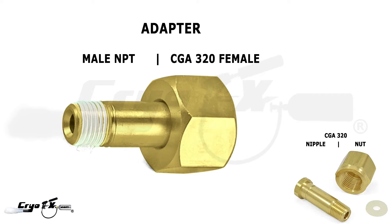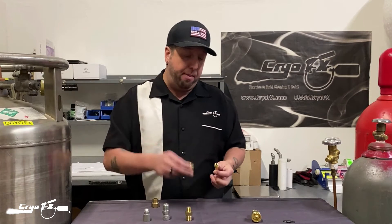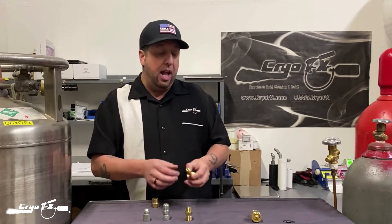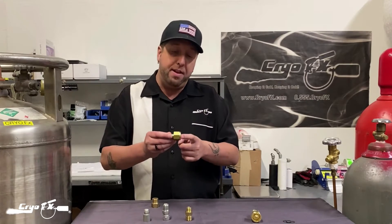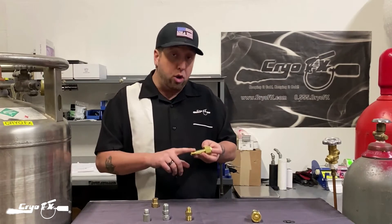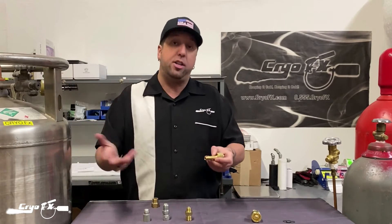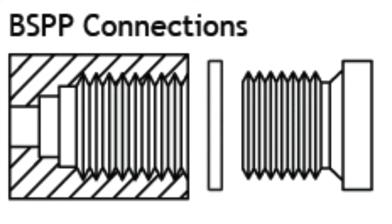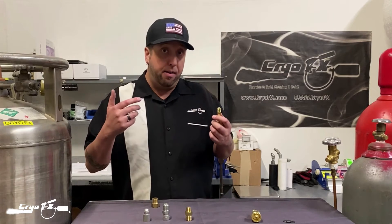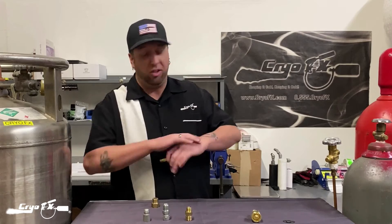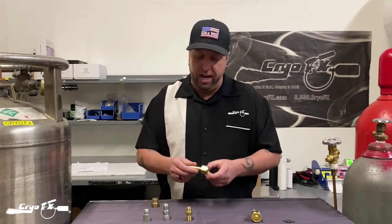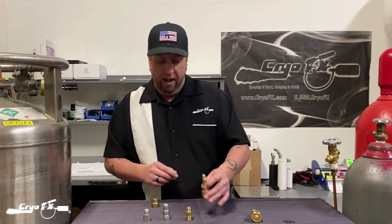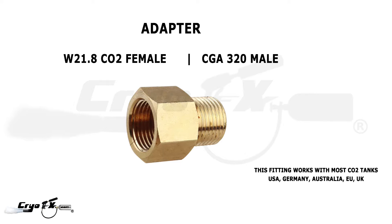You have a CGA 320 fitting right here — this has a nut and nipple. When I bring you up closer we'll show you in a minute. However, this could also be called an adapter. For this CO2 cylinder adapter you have your female CGA 320 and then your male quarter inch NPT. This can also be converted to whatever size you need, whether it's BSPP or NPT. BSPP is British Standard Pipe Parallel, BSPT is British Standard Pipe Tapered — but that's a whole different video.